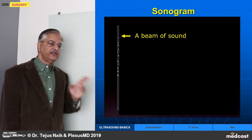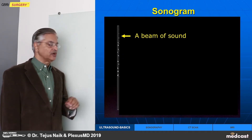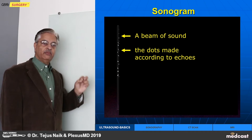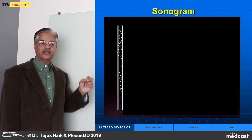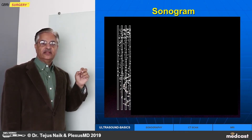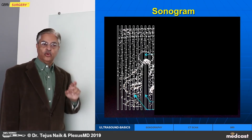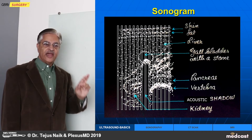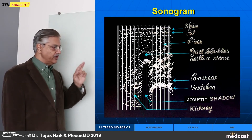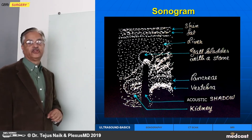Because we have multiple lines, we can generate a two-dimensional picture. For example, one beam of sound produces dots according to the echoes. There are more than one lines — there may be hundreds. And that is why if we add up the echoes in all these lines, we have a two-dimensional picture.